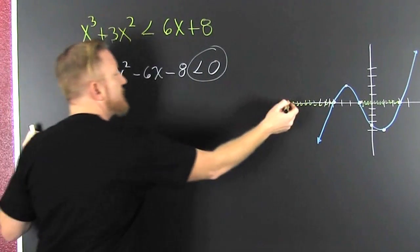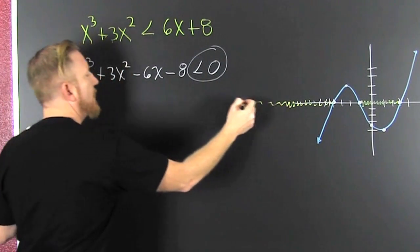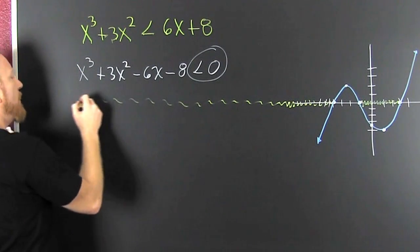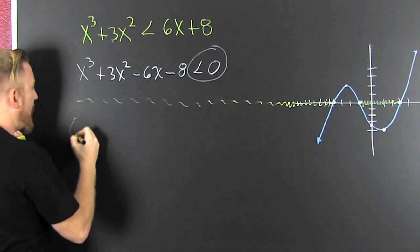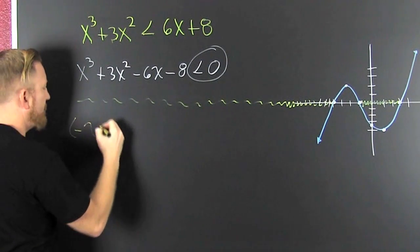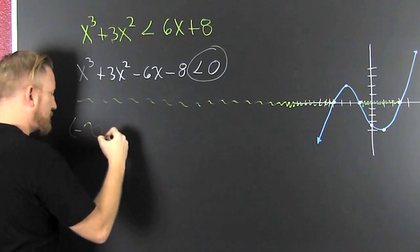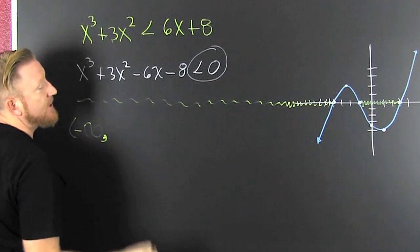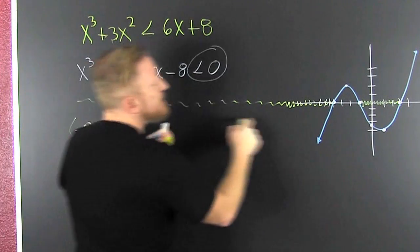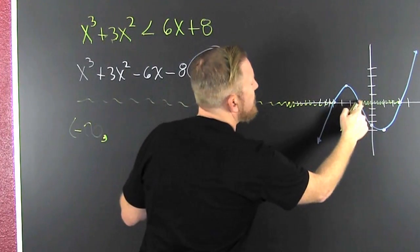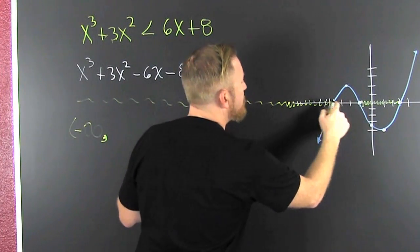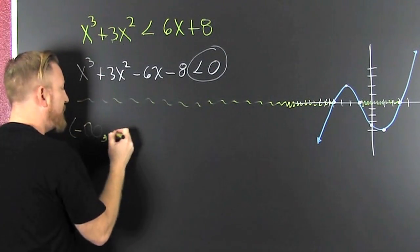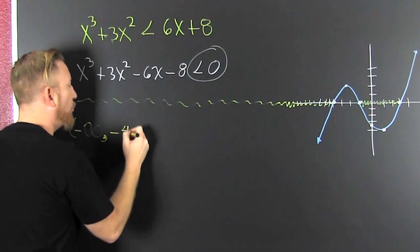The most leftmost part — where's the most leftmost part? It's way over here at minus infinity. And then to where? Looks like that's all the way to minus 4. So it's minus infinity to minus 4.